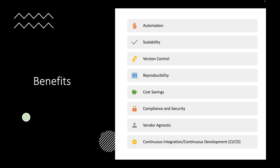Starting from the top with automation — Terraform automates the provisioning and management of infrastructure, reducing the manual effort required for deployment. Within any cloud provider, whether it's AWS, GCP, or Azure, there are many times where you're putting out a new service like a storage account or a SQL server. If you have three different architects doing the job, I guarantee they're probably going to do it in some different way. The automation, efficiency, and consistency helps out with your code.